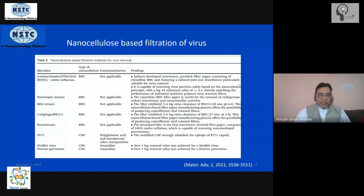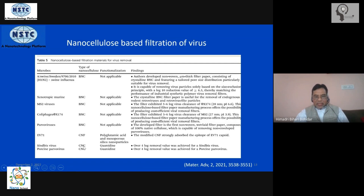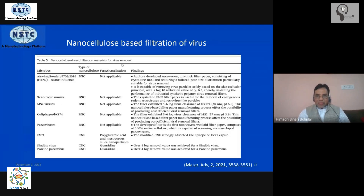On the left-hand side is a list of microbes — these are all viruses. The type of nano cellulose that has been utilized as a filter is shown, and most of these are not functionalized. They have used bacterial nano cellulose; CNF and CNC are also listed here. The key takeaway is that nano cellulose, regardless of its source of origin, can be used as a filter to remove viruses present in the effluent.